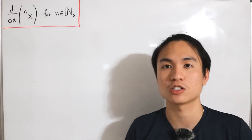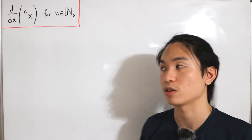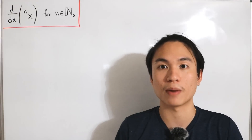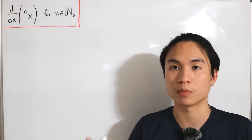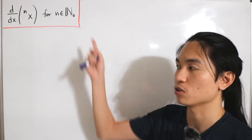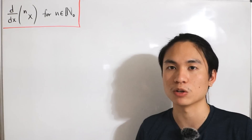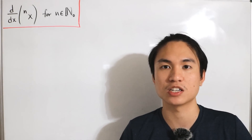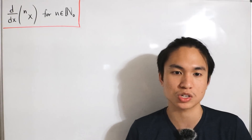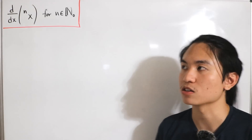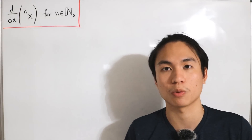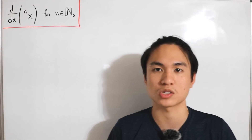We want to find the derivative of the nth tetration, and we expect a closed formula for any choice of n in the natural numbers. We'll prove this by mathematical induction. Note that the nth tetration is continuous everywhere for positive reals; for n=1 and n=0 it's continuous everywhere, and for n≥2 it's continuous for x strictly greater than zero. The approach: compute derivatives for specific values of n, identify the pattern, then prove it by induction.